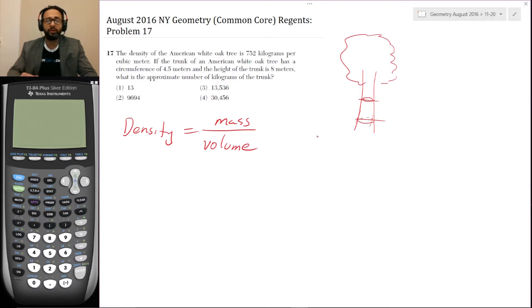At this point we need to plug in numbers here. So if this trunk is modeled by a cylinder, okay. So then the circumference C is equal to 4.5 meters and the height is 8 meters.